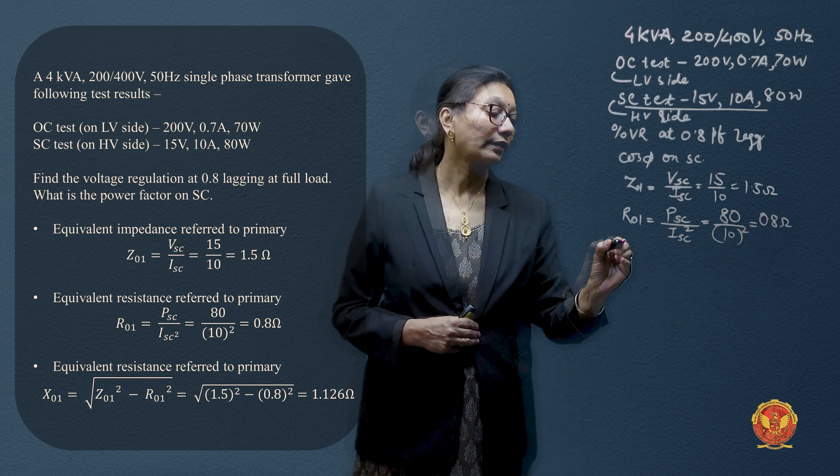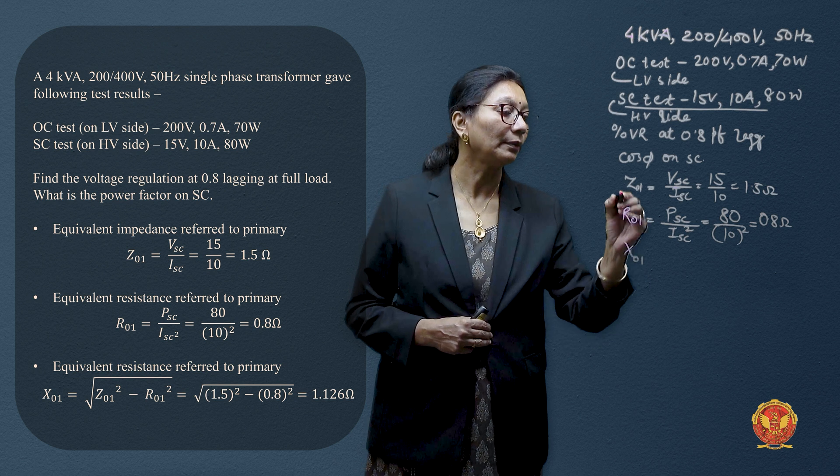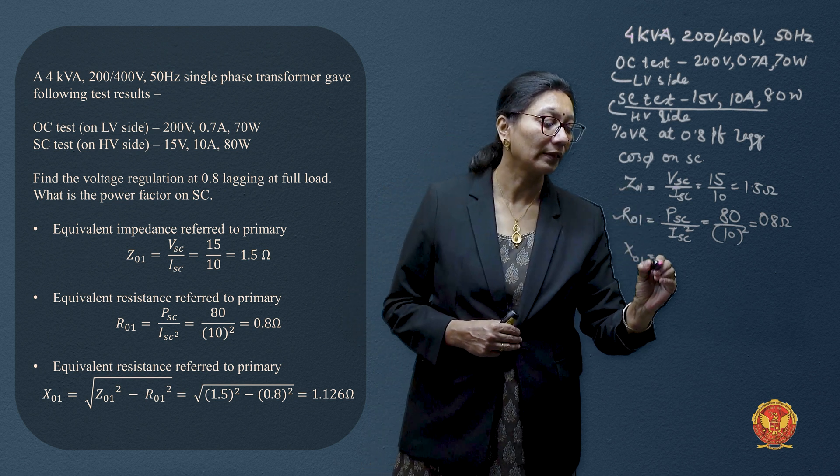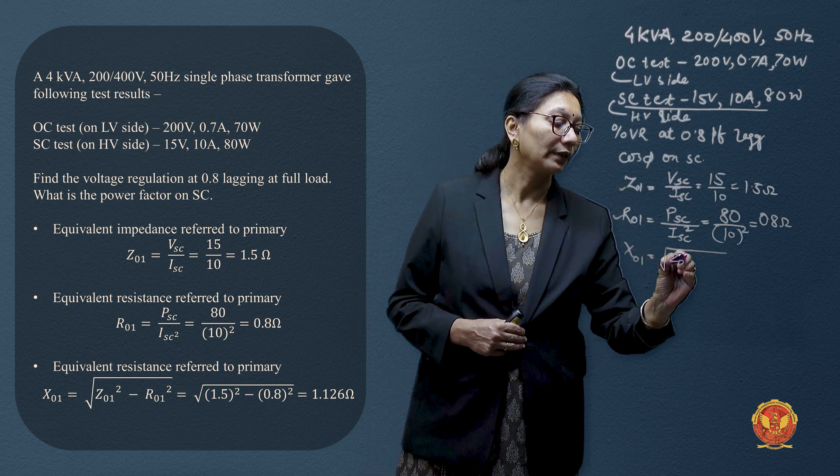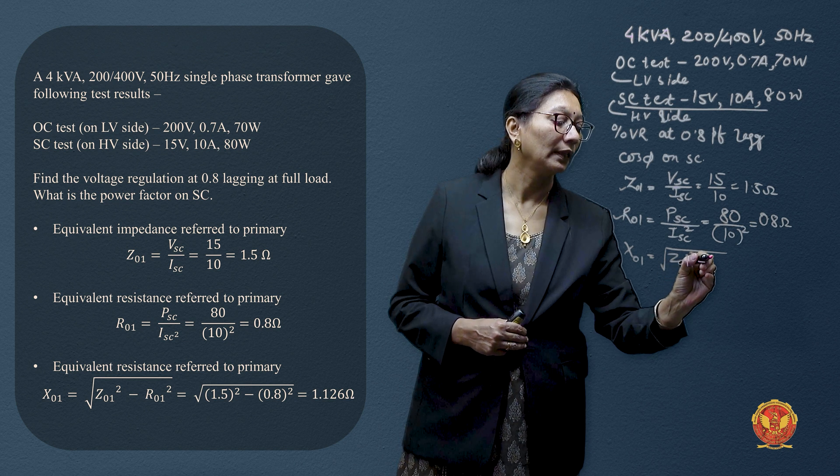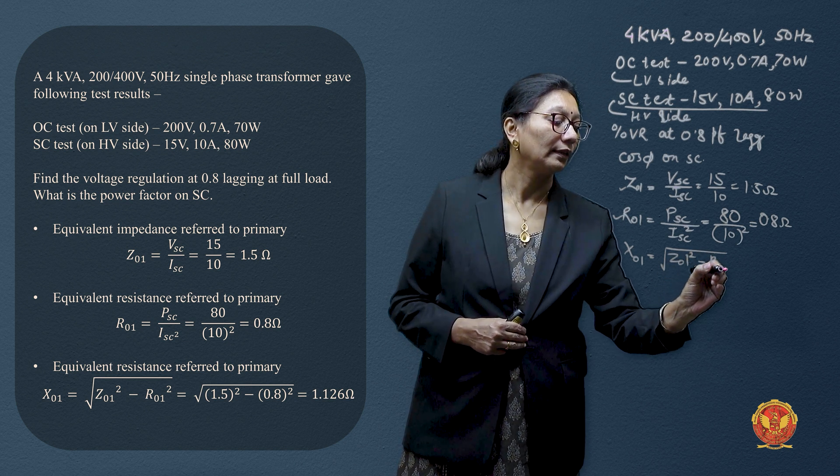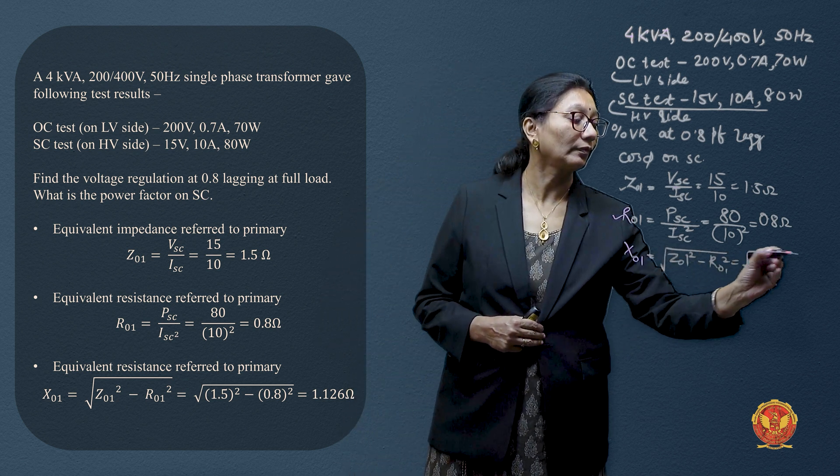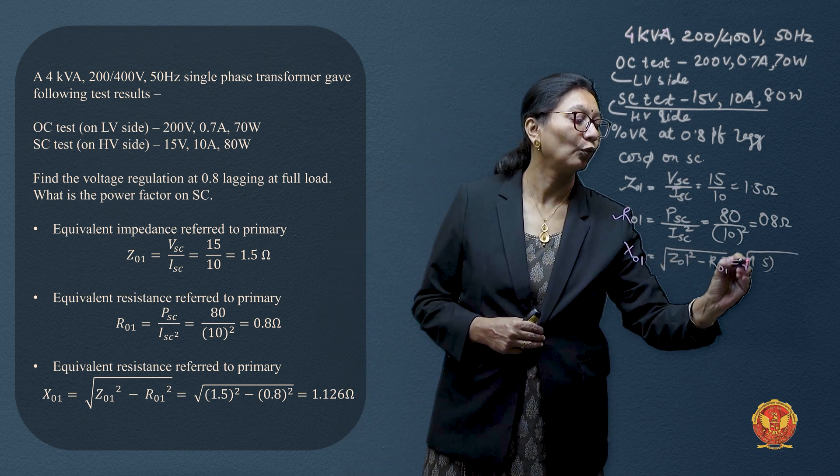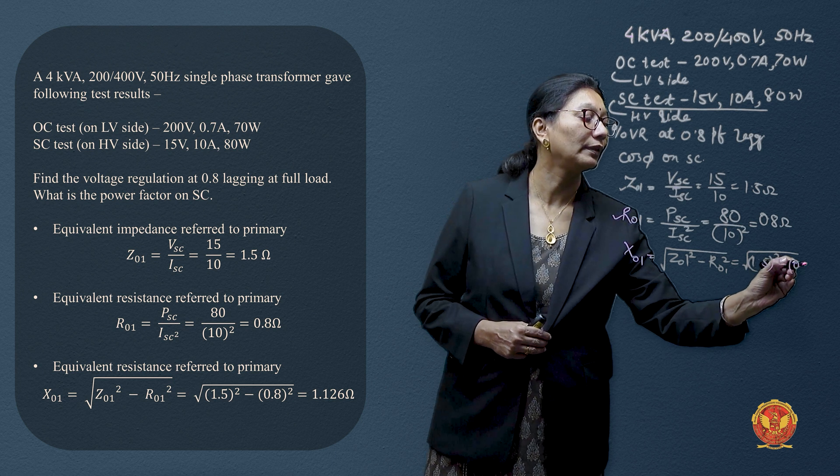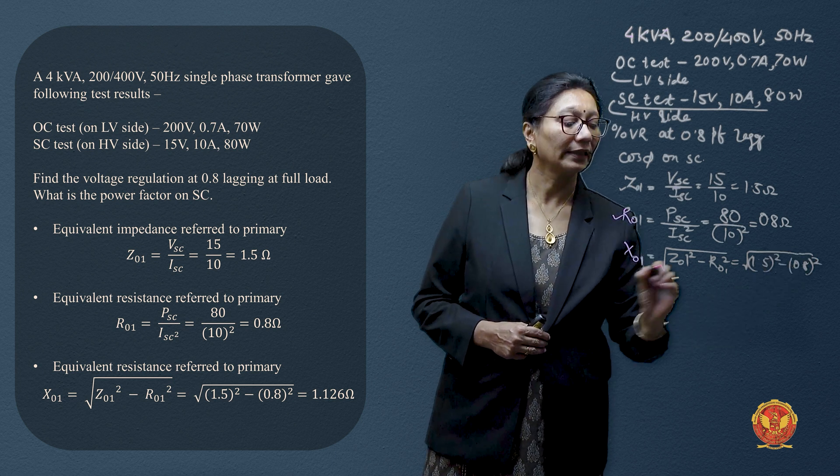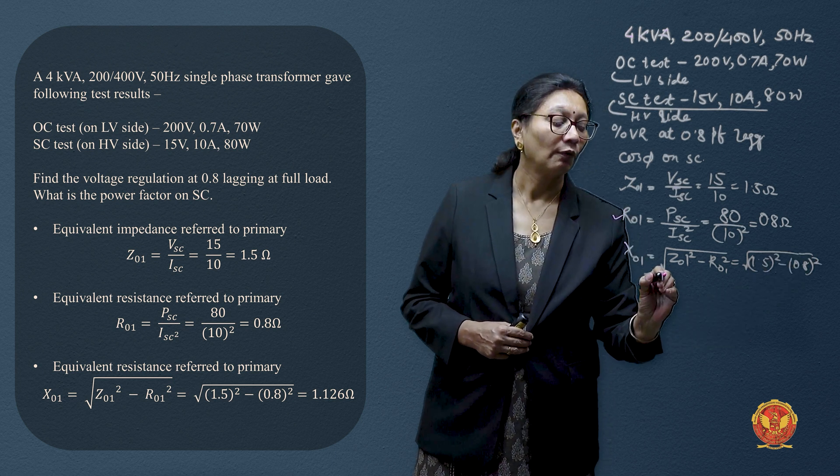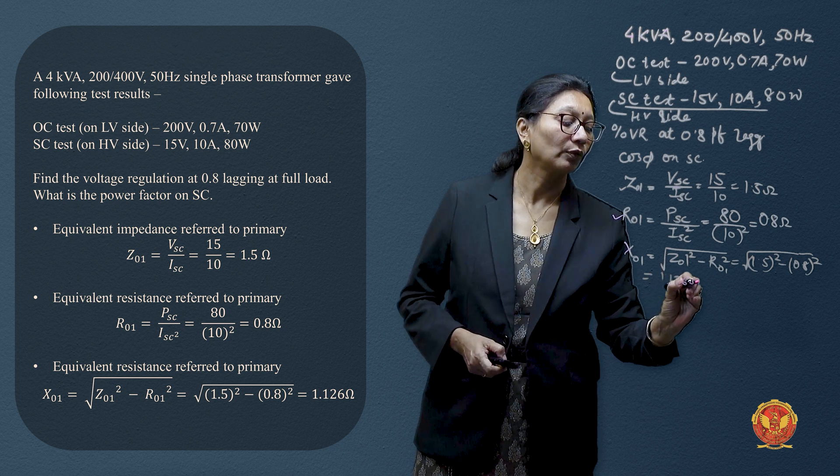Now next, equivalent reactance referred to primary can be obtained from these two readings. That is Z_01 referred to primary and R referred to primary, which will give us value as root of 1.5 whole square minus 0.8 whole square. This gives us numeric value 1.126 ohms.